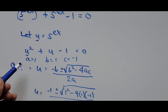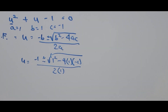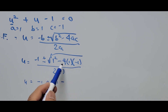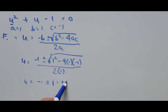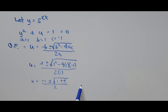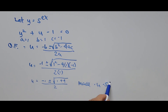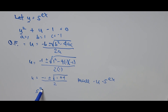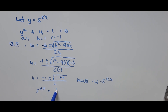Simplifying: u equals negative 1 plus or minus the square root of 1 minus 4 times negative 1, which gives positive 4, so the square root of 5, divided by 2. Recalling that u represents 5 to the power of ex, we substitute back: 5 to the power of ex equals negative 1 plus or minus the square root of 5, divided by 2.